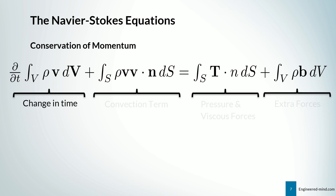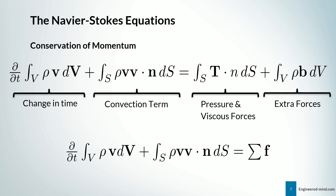For the conservation of momentum, we have the change in time, the convection term which is nonlinear, and on the right hand side the pressure and viscous forces plus extra forces. We will go into more detail in the next video when we derive the Navier-Stokes equations. This is rearranged and is nothing else than Newton's second law of motion. Also note that the V — the velocity vector — was missed in the CFD introduction video, so please make sure to account for the missing velocity component in the momentum equation if you watched or will watch that video.